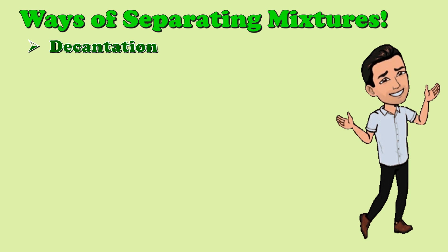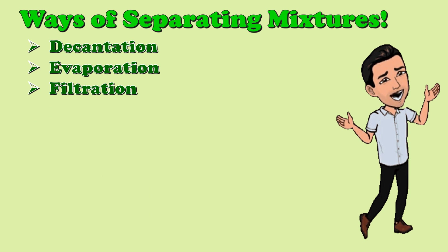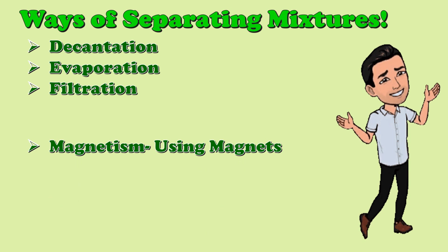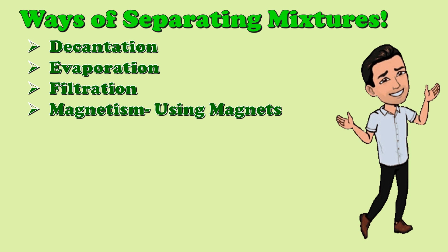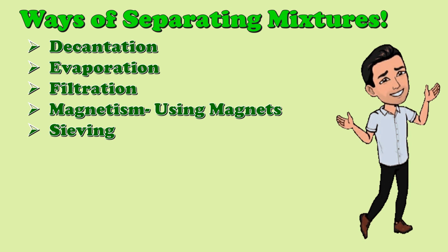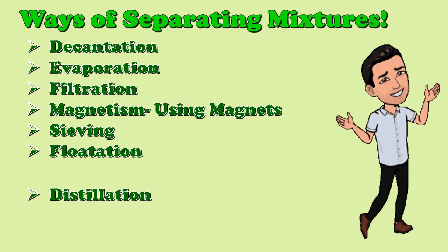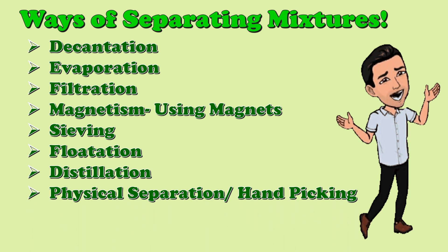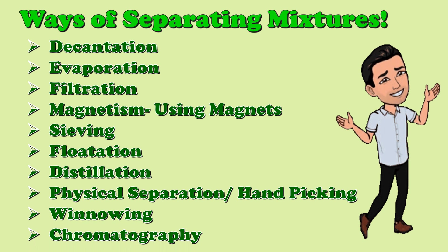We have the following: decantation, evaporation, filtration, magnetism or using magnets, sieving, flotation, distillation, physical separation or hand-picking, winnowing, and chromatography.